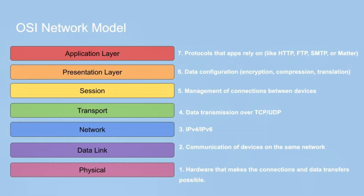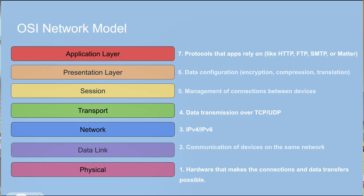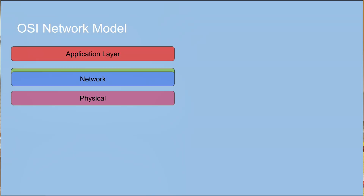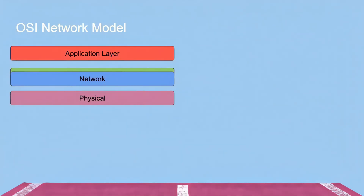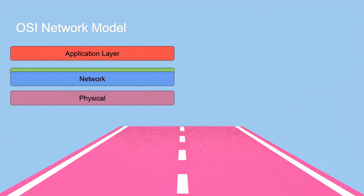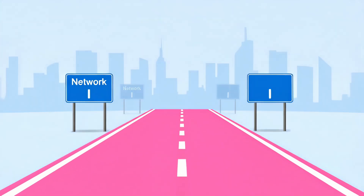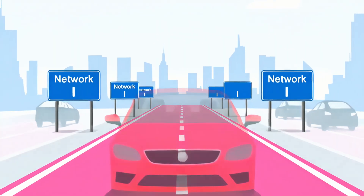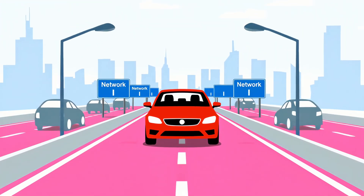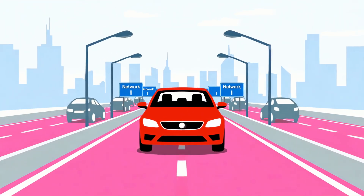Let's zoom out for a second. Every smart device in your home communicates using what's called the OSI model. Think of your smart home traffic like city streets. The physical groundwork — radio waves, cables, and chips — that's the pavement of your roads, the physical layer. The protocols are the type of road — Wi-Fi, Zigbee, Thread — that's your network layer. And the rules of the road, the universal traffic laws, that's Matter, the new common language, the application layer.